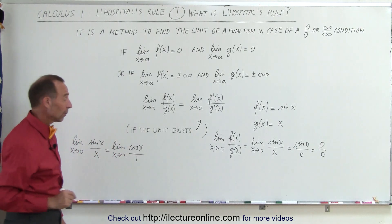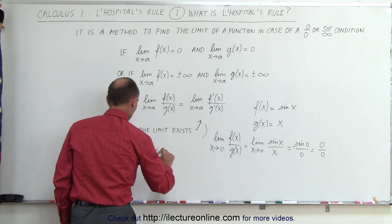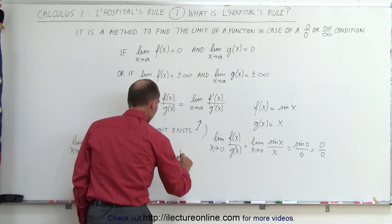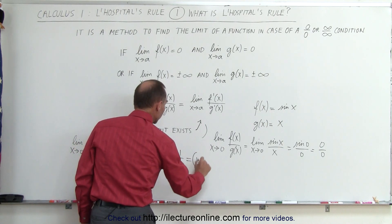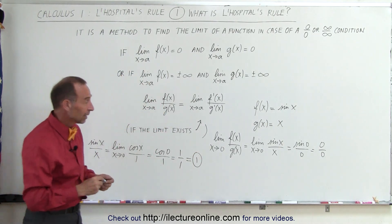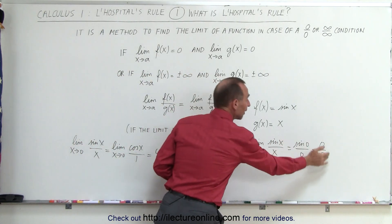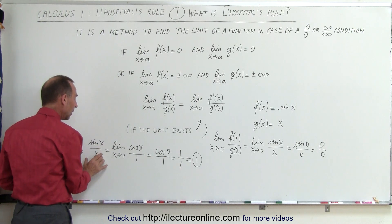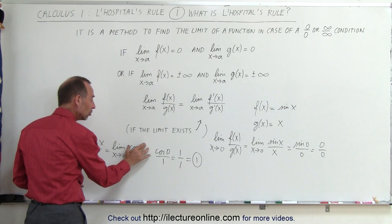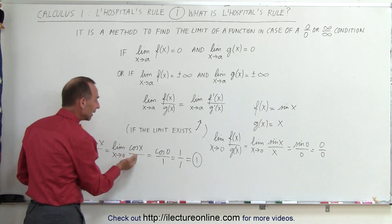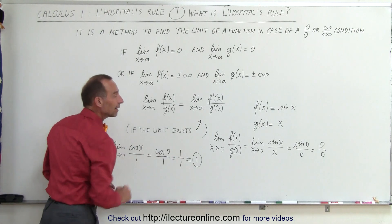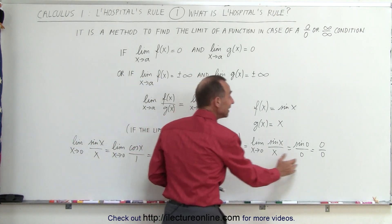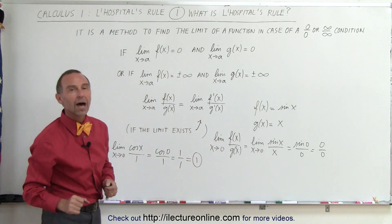Now let's plug in the limit and see what we get. This is equal to the cosine of 0 divided by 1 — the cosine of 0 is 1, so it's 1 divided by 1, which equals 1. So it turns out that at first when we plug in the limit we get 0 divided by 0, but using L'Hôpital's rule — by taking the derivative of the numerator and the derivative of the denominator — we get different functions and letting x approach 0 gives an actual definitive value. The limit is indeed 1, which we wouldn't know without using L'Hôpital's rule.